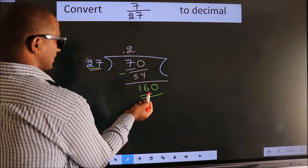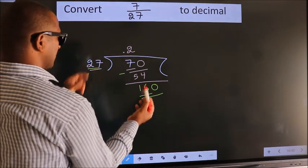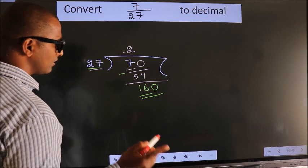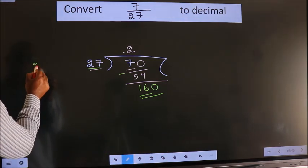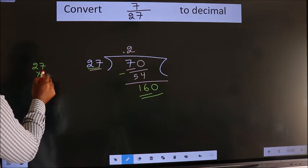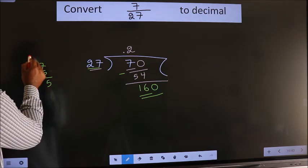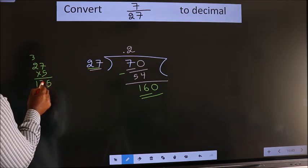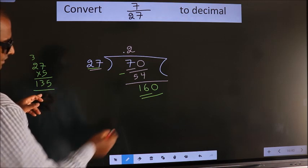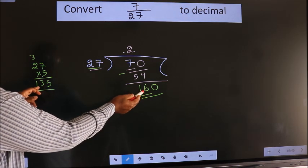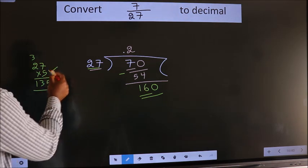A number close to 160 in the 27 table is 5. So 27 into 5: 5 times 7 is 35, 5 times 2 is 10 plus 3 is 13. 135 is close to 160, so we go with 5.